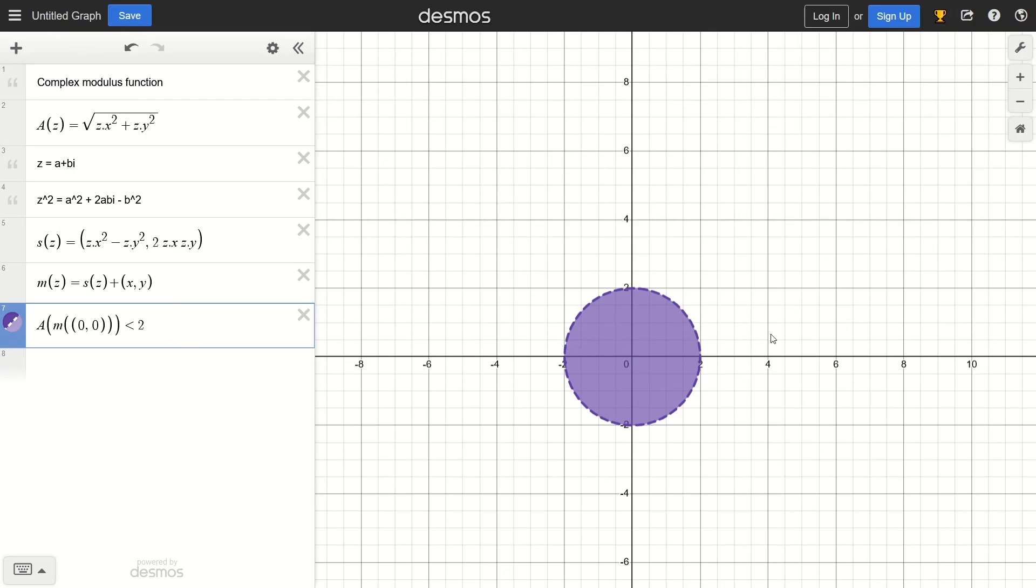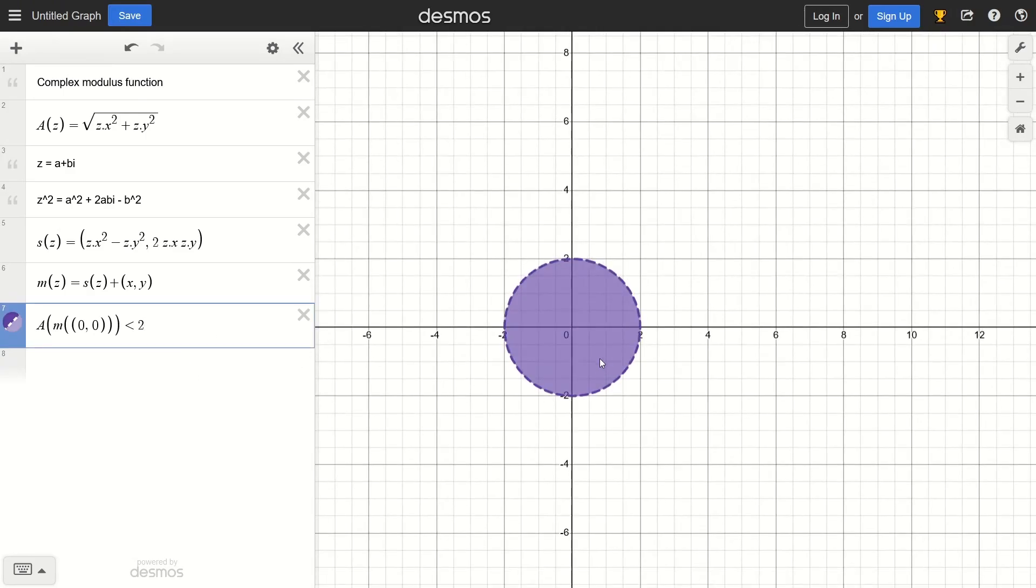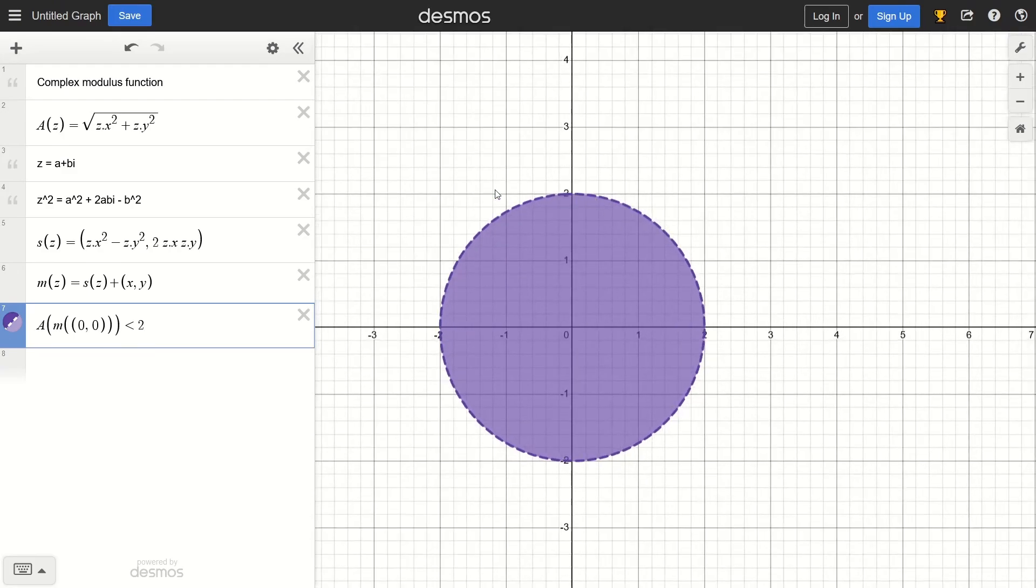So over here at first you're going to get just a circle, that's a region that's enclosed within a circle of radius 2, that is a closed disk.